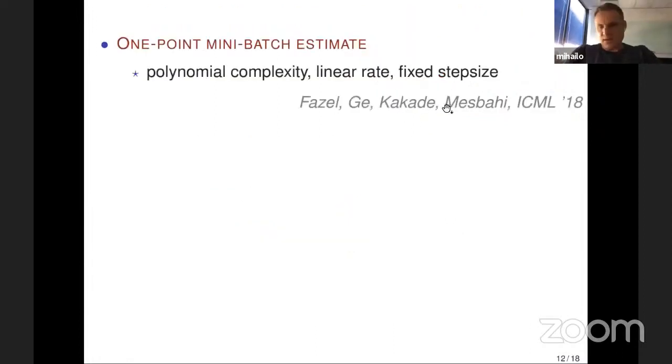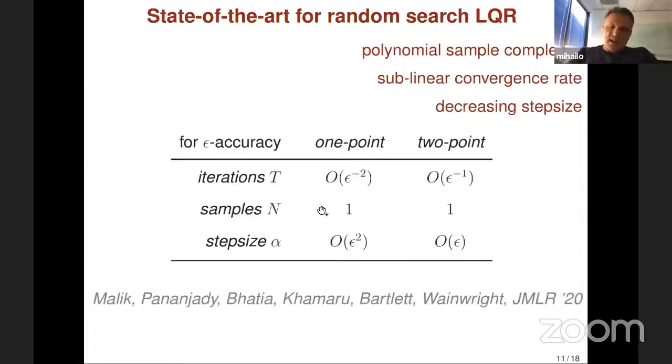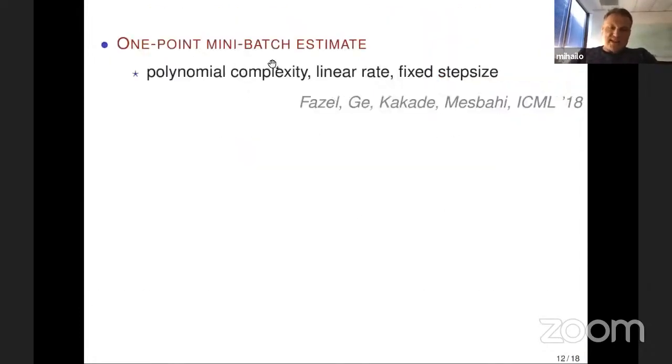They also managed to show, building on work from the University of Washington Group, that if instead of using a single sample, you utilize mini-batch gradient estimate with one-point scheme, you can have polynomial complexity in terms of one over epsilon with a linear rate of convergence and fixed step size.